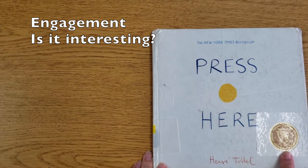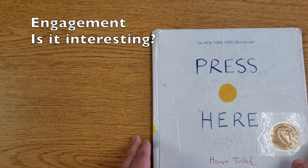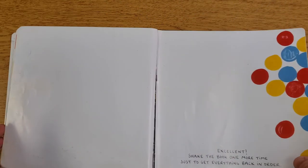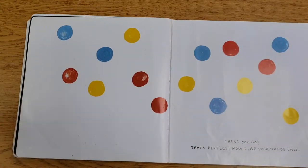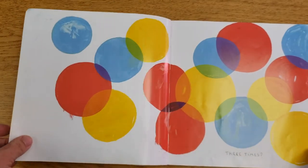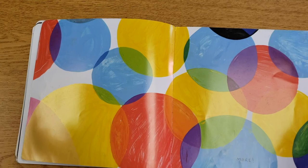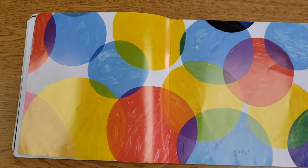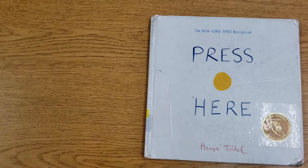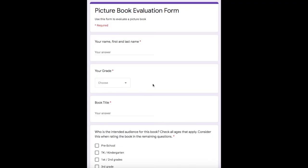'Press Here,' another California Young Reader Medal winner, is an excellent book for engagement. It's designed so that people interact with the book — 'clap your hands once,' and when you turn the page something happens. Clap twice, three times, four times, and more. Kids get so excited because they get to clap, push buttons, press and rub things, and cry out. It gives them such joy. 'Press Here' is an excellent example of a children's picture book that has engagement and interest for the intended audience.